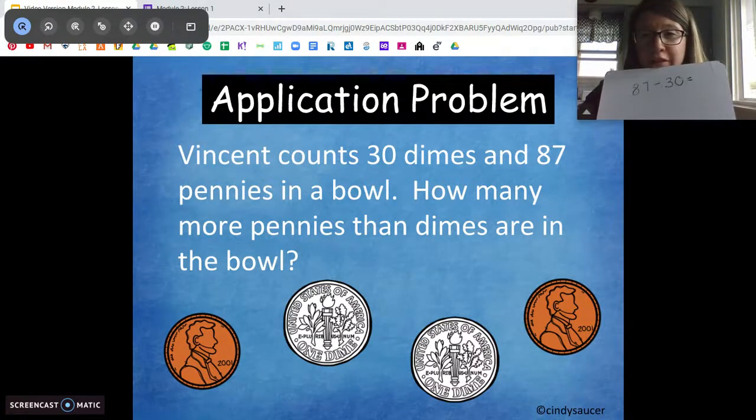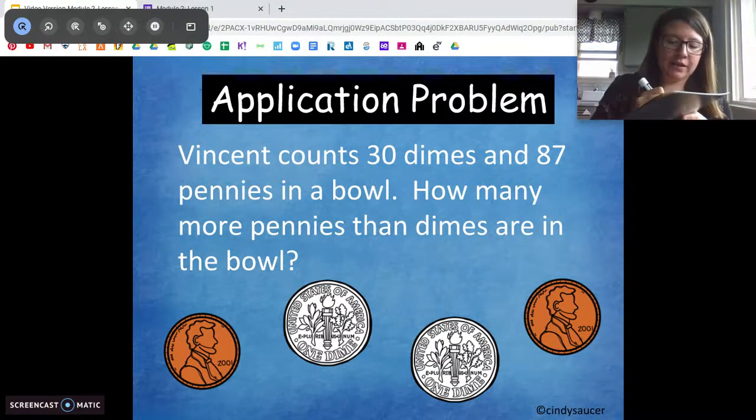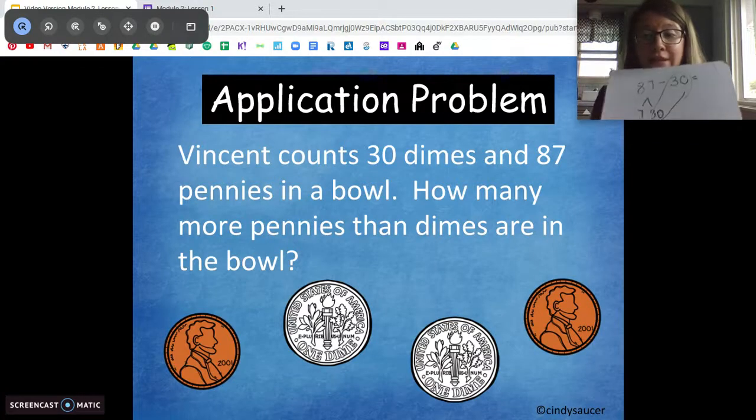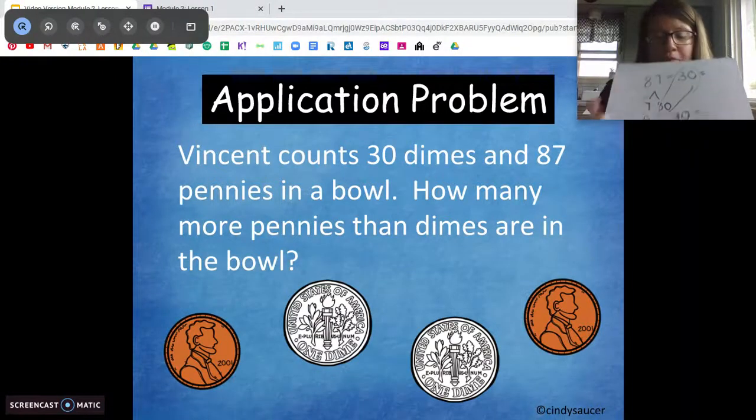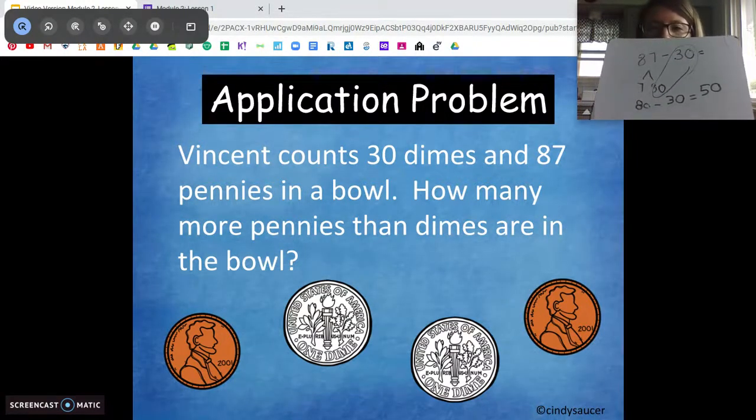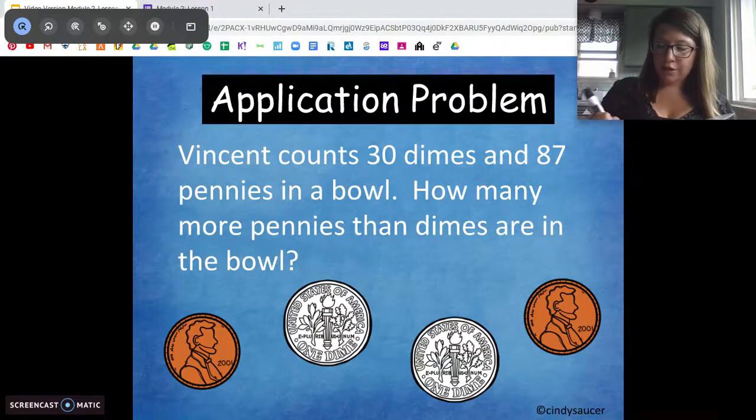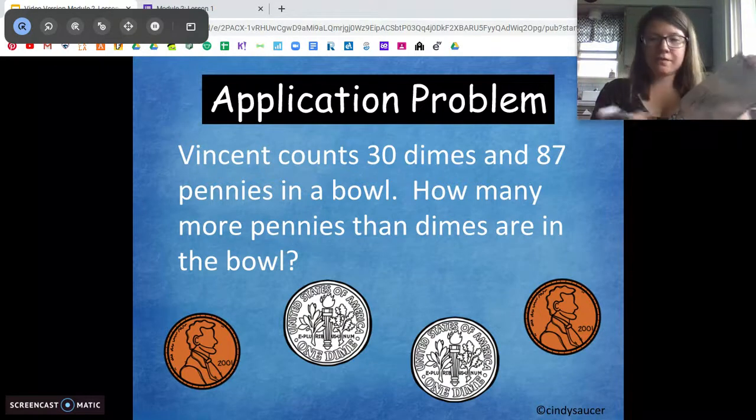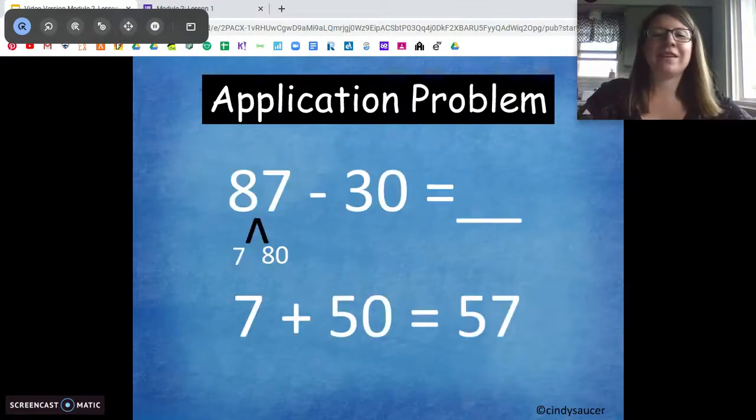So I'm going to start with eighty-seven minus thirty. Now I know I can solve this problem by decomposing. So I'm going to break eighty-seven into tens and ones. So I have eighty and seven. Now from module one, I know that I can subtract like terms. I can subtract my tens. So I can take eighty minus thirty, which equals what? Fifty. Good. And then what's my next step from there? Good. I have to add in my extra seven. So I'm going to take my answer to my tens subtraction and solve. Fifty plus seven equals? Good. Fifty-seven. So how many more pennies were there than dimes? Fifty-seven. Awesome work.